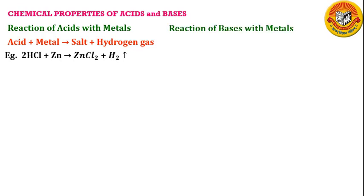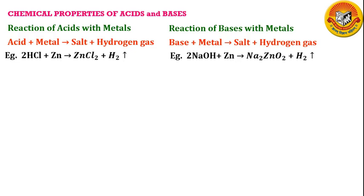Similarly, when metal reacts with bases, we again get salt and hydrogen gas. Bases also react with metal and give salt and hydrogen gas. When we react sodium hydroxide (NaOH) with zinc, we get sodium zincate (Na₂ZnO₂) and hydrogen gas. Please make a note of this formula: sodium zincate is Na₂ZnO₂.